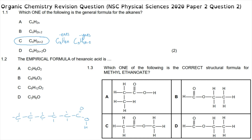We can see that this formula has six carbons, twelve hydrogens, and two oxygens. We'd be tempted to say option C is the correct answer, but we must remember the question asks for the empirical formula, which is the simplest ratio of atoms to each other — not the molecular formula.